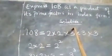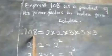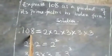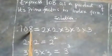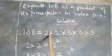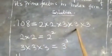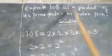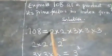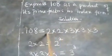Now let us look at the solution. When we express this as the product of its prime factors, we have 2 times 2 times 3 times 3 times 3. That is the meaning of expressing as a product of its prime factors. When you multiply 2 times 2, it gives 4.